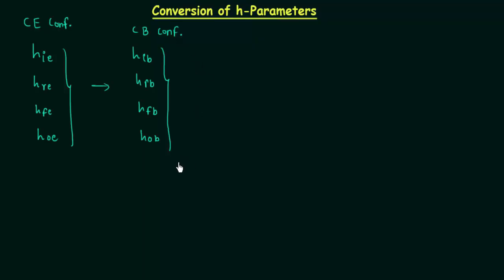In the same way you can find out H parameters for common collector configuration using the H parameters of common emitter configuration. Now, why do we need the conversion of H parameters? Transistor manufacturers generally provide the H parameters of a transistor in common emitter mode, as it is the most widely used mode. To find out the H parameters for common base mode and common collector mode, certain approximate formulas are needed. The derivation of these formulas is not important in this course.